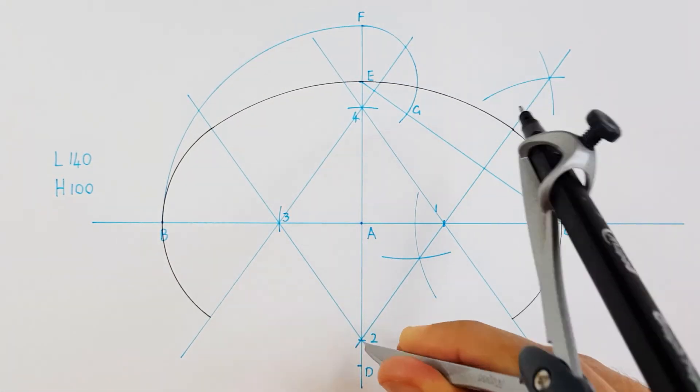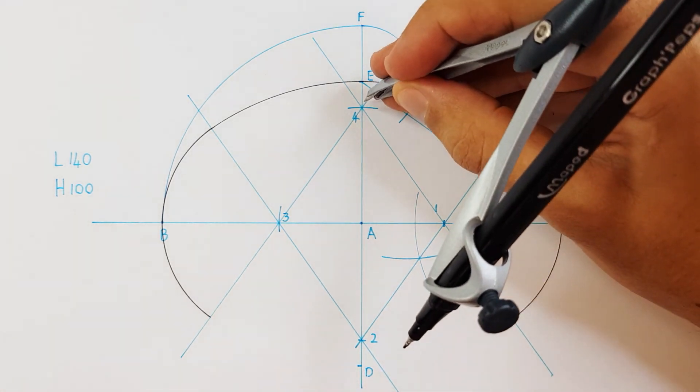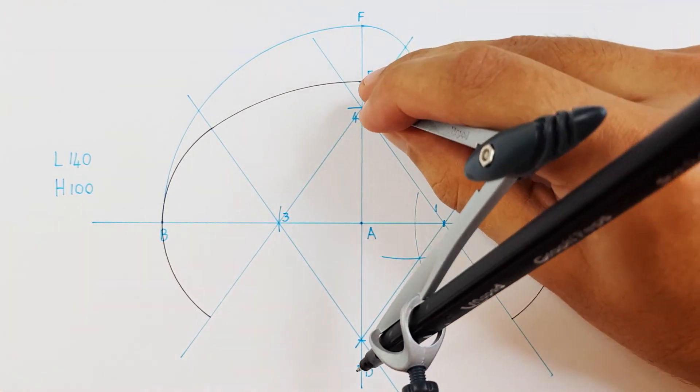Without adjusting your compass, place your compass on point 4 and draw the bottom part of your ellipse.